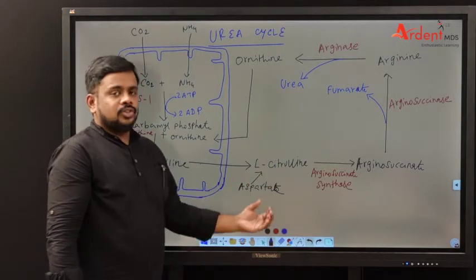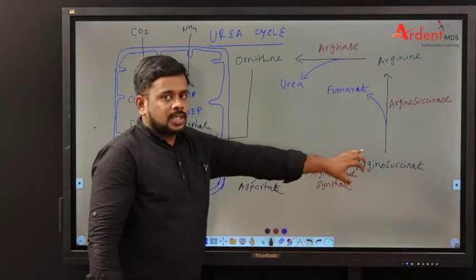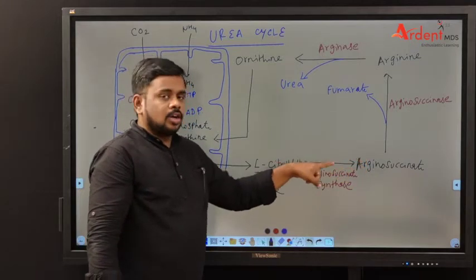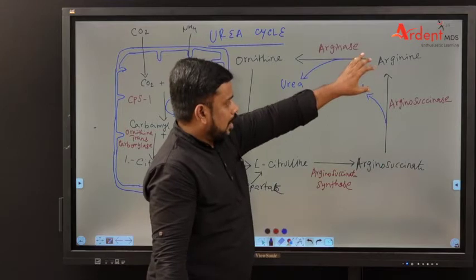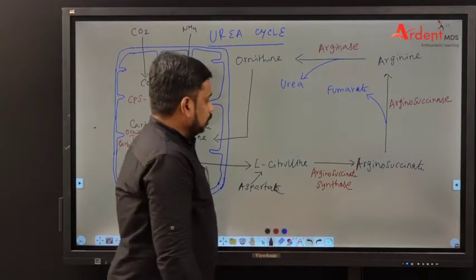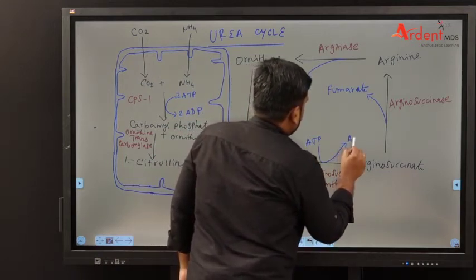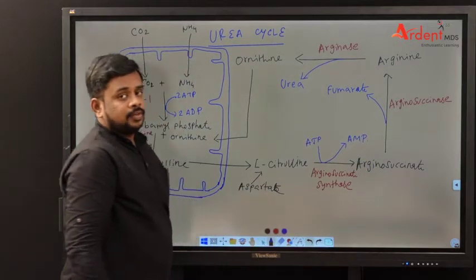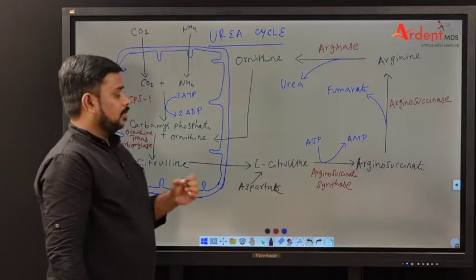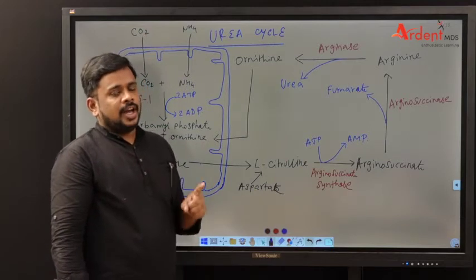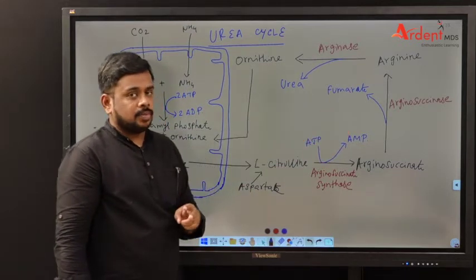Once citrulline goes to the cytoplasm, it joins with one more amino acid called aspartate and produces a molecule called arginosuccinate. The enzyme which helps for this is called arginosuccinate synthase. Here, one ATP is utilized, but instead of ADP formation, AMP is produced, meaning two high energy phosphates are utilized. If ATP is converted to ADP, one high energy phosphate is used, but here ATP is converted to AMP, so two high energy phosphates are utilized.